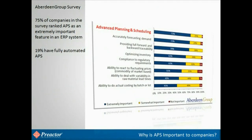In a survey carried out by the Aberdeen Group very recently, when companies were asked what were the most important features in an ERP system, APS came out top. 75% of companies said that APS was extremely important to them. However, only 19% of them had a fully automated system within their ERP or used a third-party tool like Preactor. Most used spreadsheets to carry out the planning process.